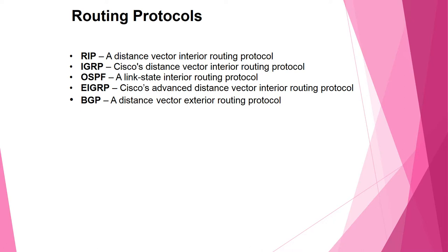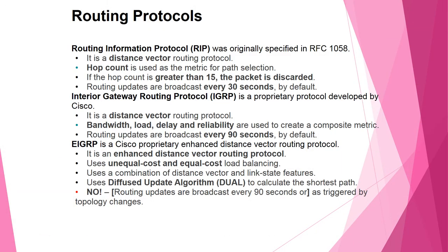Routing protocol classifications: IDA (Interior Distance vector Algorithm) protocols include distance vector interior routing protocols. OSPF is a link state interior routing protocol. EIGRP is an advanced distance vector interior routing protocol. BGP is a distance vector exterior routing protocol. The Routing Information Protocol (RIP), originally specified by RFC 1058, is a distance vector routing protocol that uses only hop count as the metric for path selection. If the hop count exceeds 15, the packet is discarded. Routing updates are broadcast every 30 seconds by default.